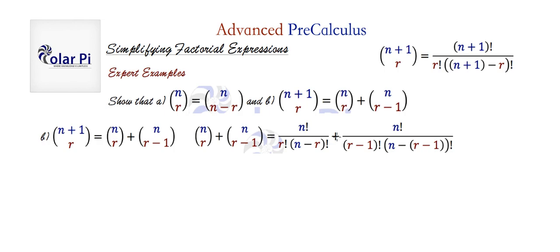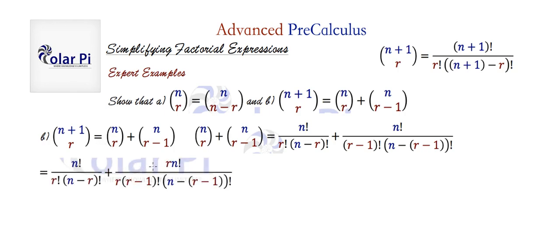In order to add them, we need them to have the same denominators. Since we have an r factorial here and an r minus one factorial here, we need to multiply the second quotient by r in the numerator and denominator. That way the denominator in this part will just be r factorial, because r times r minus one factorial is r factorial.